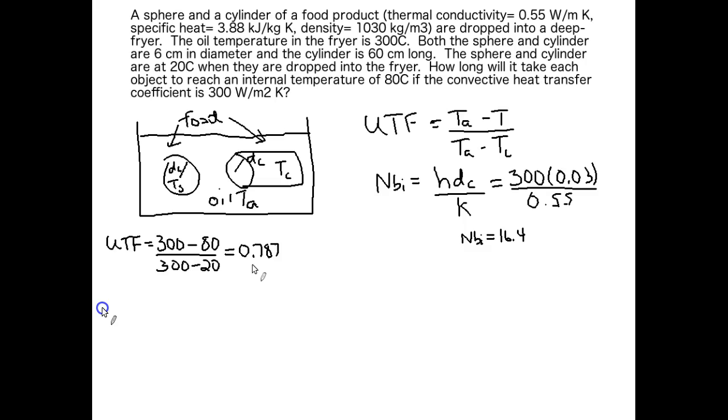If we look on the Heisler charts for cylinders and spheres, what we're going to look up is the Fourier number. And the Fourier number, which we'll see the equation for in just a minute, is equal to 0.12 for cylinders and 0.1 for spheres. So there's just a little bit of difference in the Fourier number, but that actually will make a large difference in time.